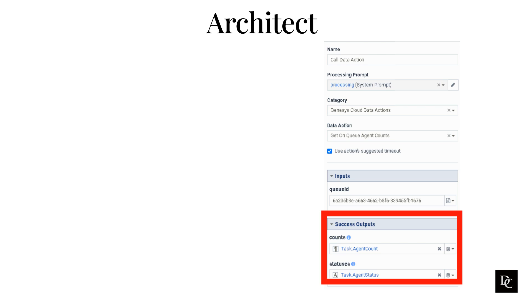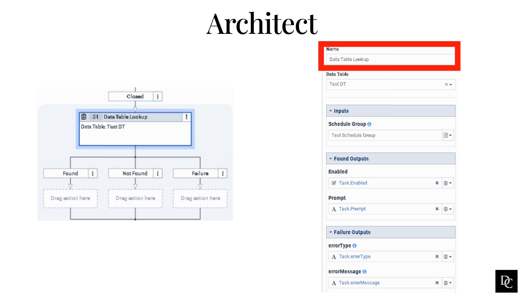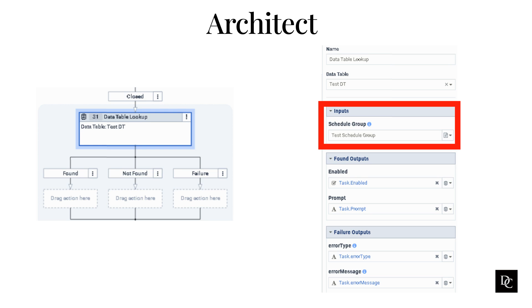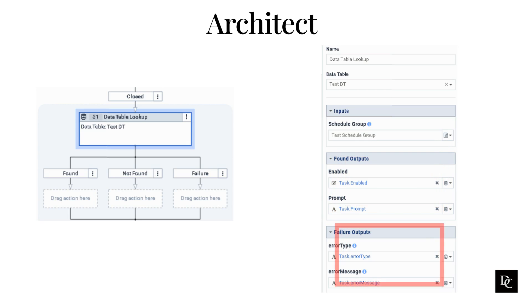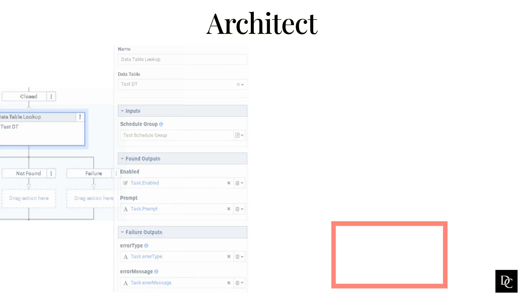Next, let's use the data table we just created. Use the data table lookup action to retrieve data stored in a Genesys Cloud data table. After adding the data table lookup from the toolbox, type a distinctive name for the action — the label you enter here becomes the action's name displayed in the task sequence. Select the data table by clicking the arrow and selecting the desired data table. Enter the reference key value you want to find — this would be the schedule group name. The found outputs map the custom field values in the data table to variables within the flow, while error outputs allow mapping of any resulting error type and error message. The developer then sets the found, not found, and failure paths based on the information returned.